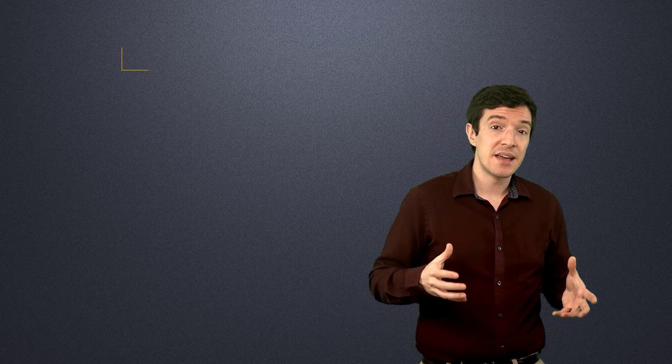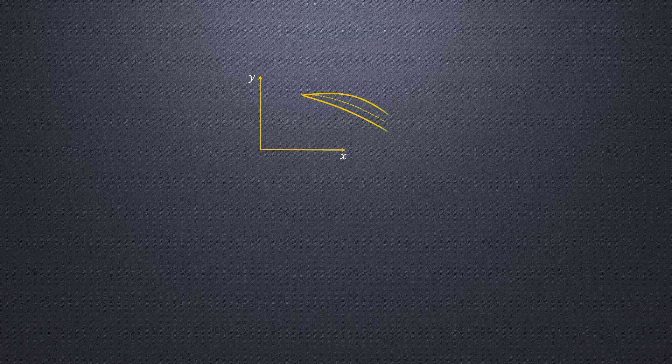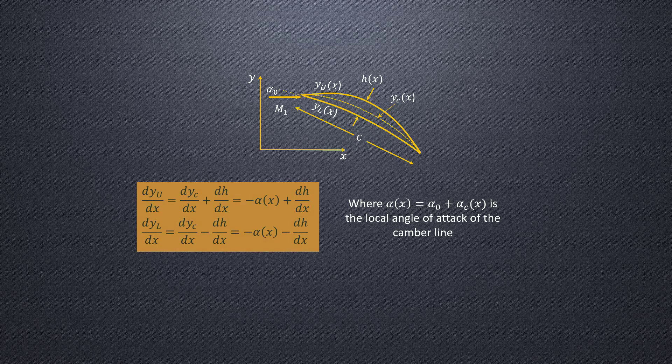The thin airfoil theory can be extended to an arbitrary airfoil shape. Let us consider an airfoil whose upper and lower surfaces are defined as functions of X. Using the thickness distribution and the camber line, the surface profiles can be written as shown here.